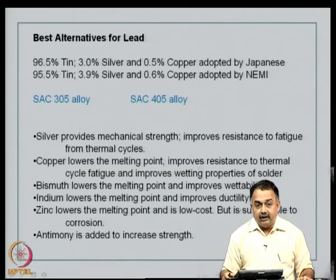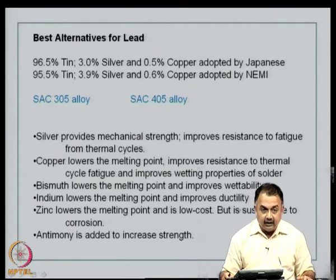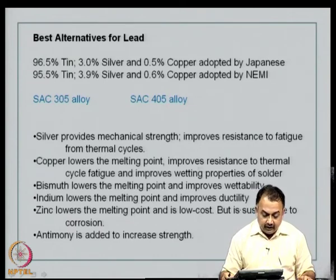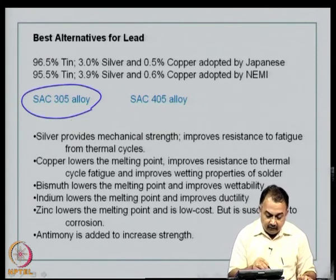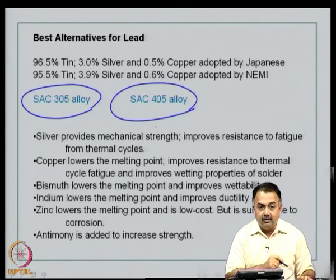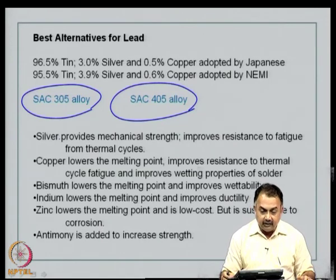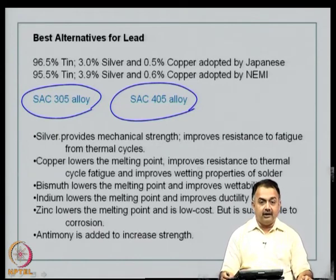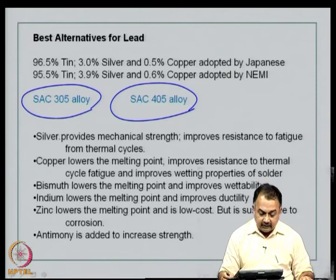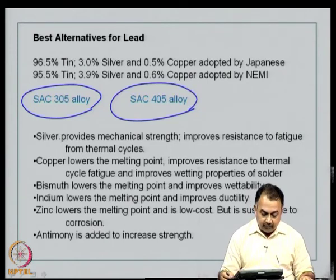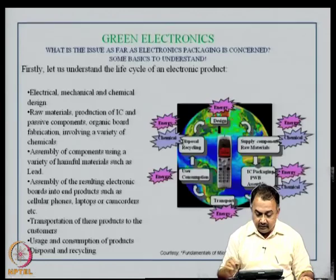Alternatives for lead are very important because lead is being phased out and we are looking at lead-free electronics. Tin is a problem because of whiskers, therefore alternatives for lead could be SAC 305 or SAC 405 alloy — typically a large percentage of tin with a small percentage of silver and copper. Silver provides better mechanical strength and improves resistance to fatigue from thermal cycles. Copper lowers the melting point, improves resistance to thermal cycle fatigue, and improves wetting properties.